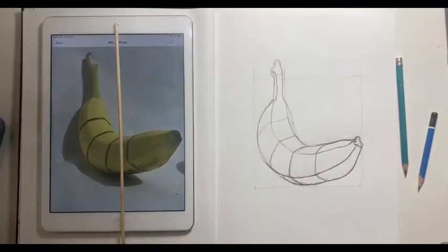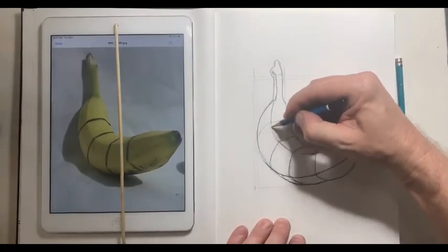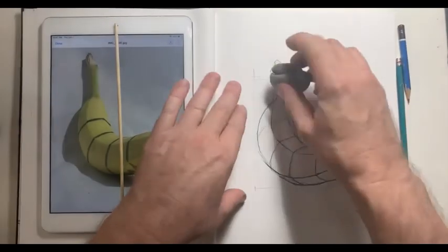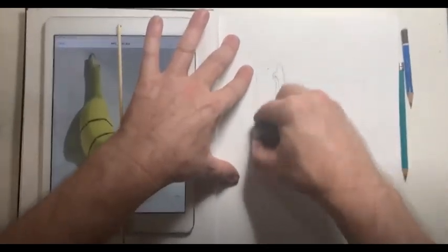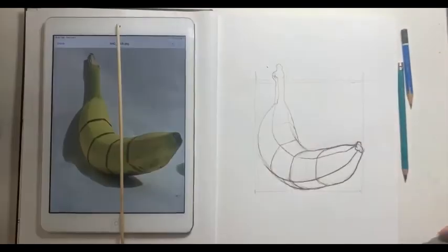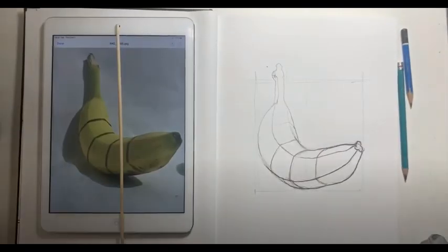I'm going to use a kneaded eraser and tap some of the lines that are on the back part of the object to lighten them up, which gives it a sense of what we call atmospheric perspective. That's the sense that objects get lighter as they recede away from us in space.